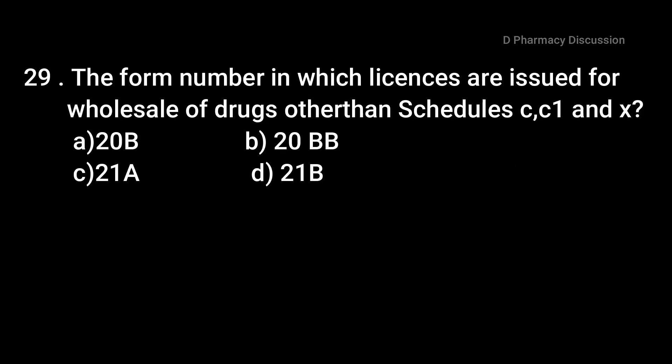Question number twenty-nine: the form number in which licenses are issued for the wholesale of drugs other than schedule C, C1, and X — option A: 20B, option B: 20BB, option C: 21A, option D: 21B. The correct answer is option A, that is form 20B.